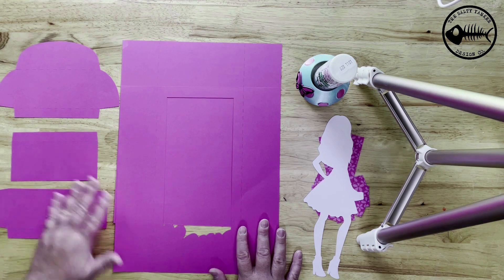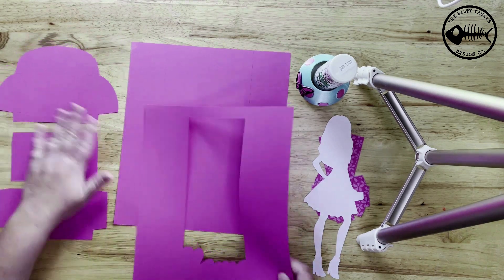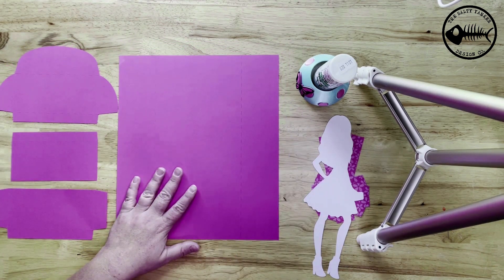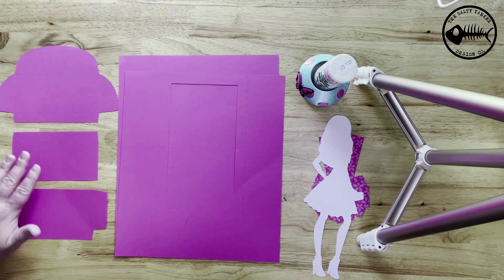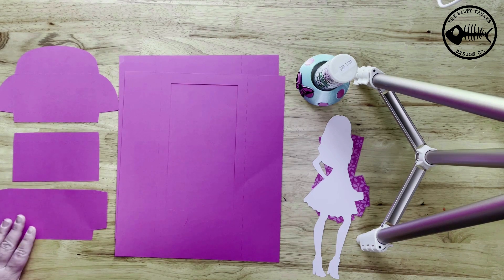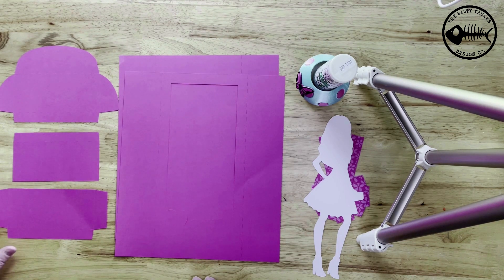There is a box that comes with this file that is the smaller version. It stands seven inches tall and it will be all in one piece. This box is separated into different pieces so that it will still be able to cut on a 12 by 12 mat.